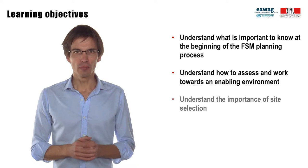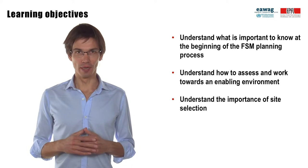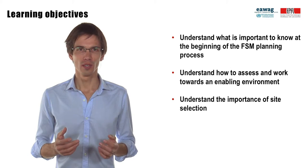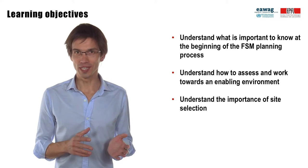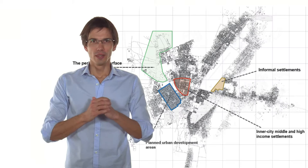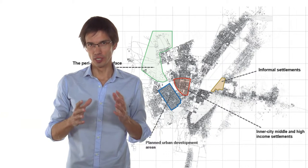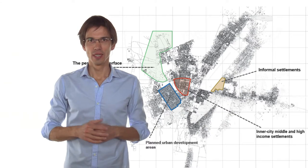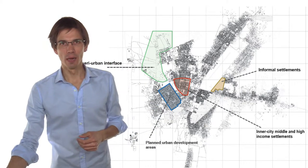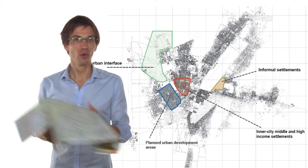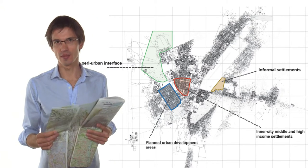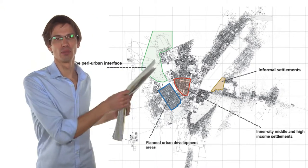This phase of the planning process is characterized by data collection via different means. The idea is to get a snapshot of the situation. Start with a helicopter view of your city — take a map or look on Google Earth and start by identifying the different sanitation contexts, as discussed in the previous module.